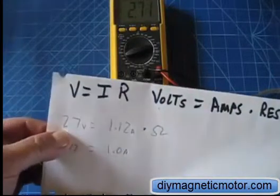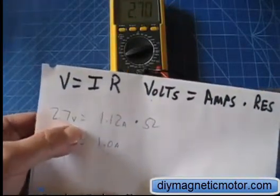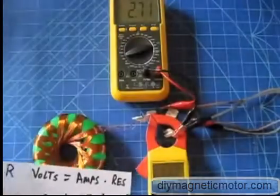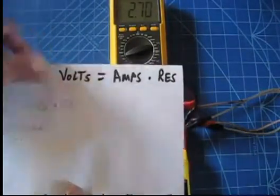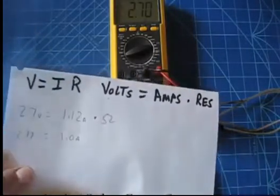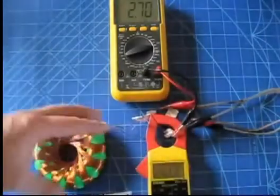Right now we're looking at 2.7 volts equals 1.11 amps, roughly 1.12, times the ohms. The ohms isn't going to change. I didn't bother to measure that because it doesn't matter. The ohms in the wire, the resistivity isn't going to change.